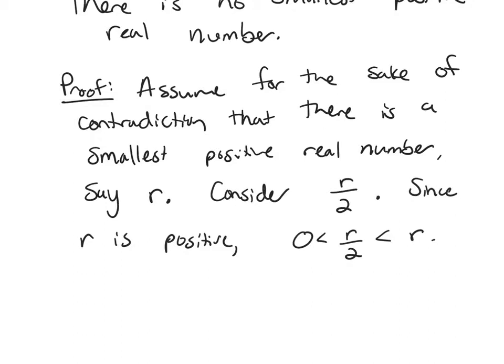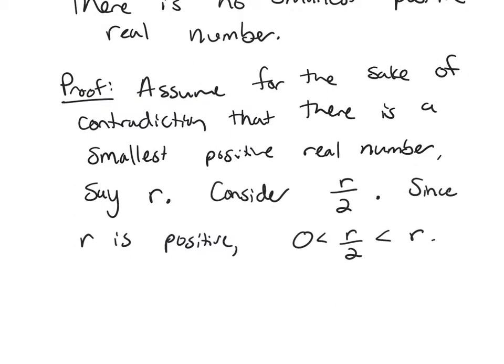Think about what this says. I've found a positive real number. That's R over 2, and it's smaller than R. But we said R was the smallest, so that's our contradiction right there.